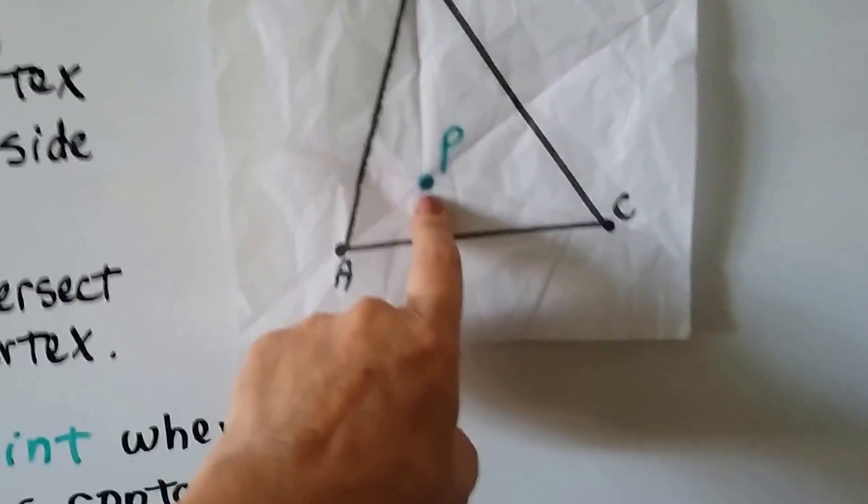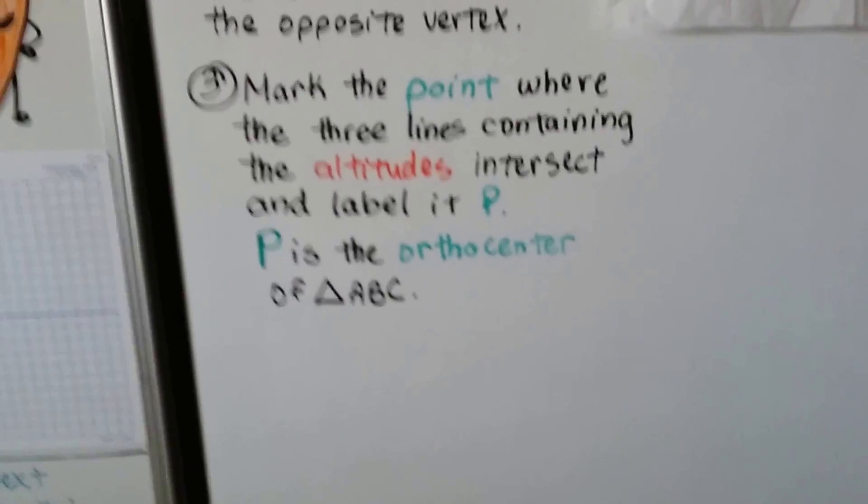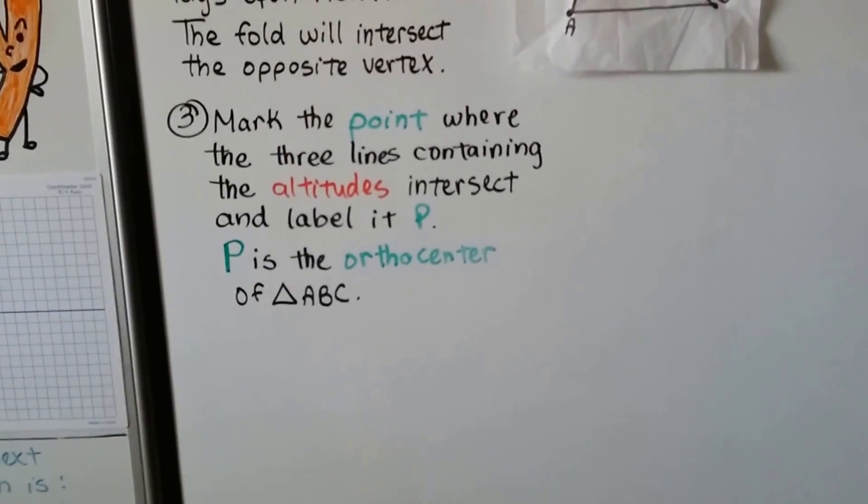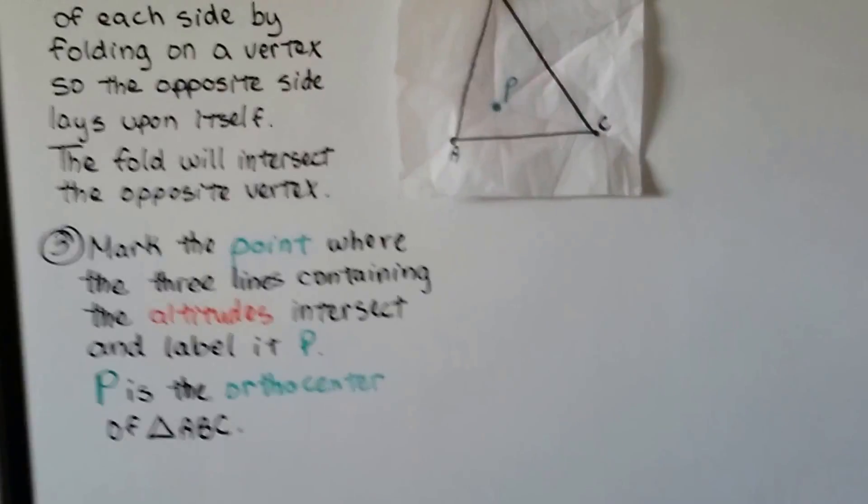And look at that. See where they intersect? We mark the point where the three lines containing the altitudes intersect and label it P. And P is the orthocenter of triangle ABC.